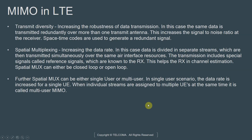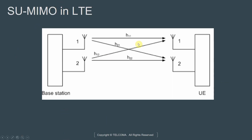Spatial multiplexing can either be single-user or multi-user. In a single-user scenario the data rate is increased for a single UE. When individual streams are assigned to multiple UEs at the same time, it is called multi-user MIMO. Looking at this picture, this is an example of single-user MIMO in LTE where we have the base station on one side and the UE on the other. We have a 2x2 system sending two data streams, and every received signal is a combination of signals from antennas one and two. The channel impulse response is estimated by the UE based on cell-specific reference signals, then demodulation happens, giving a higher data rate for this single user.